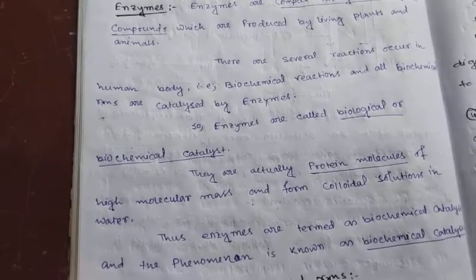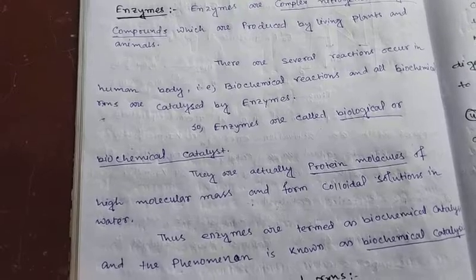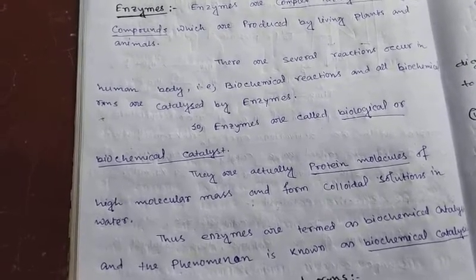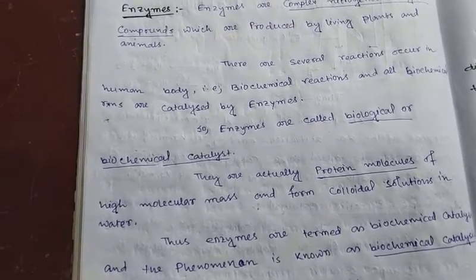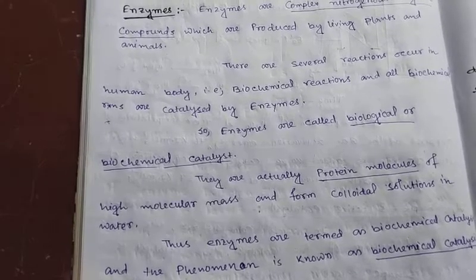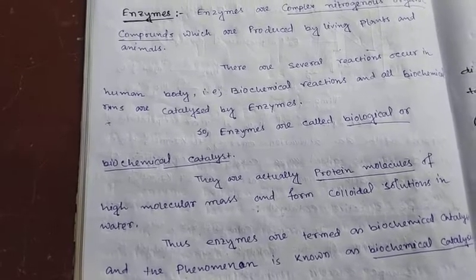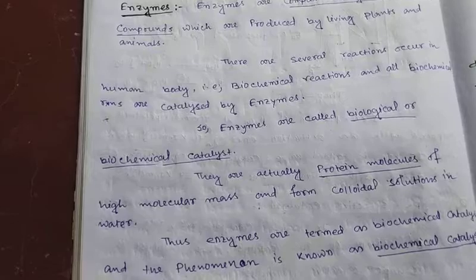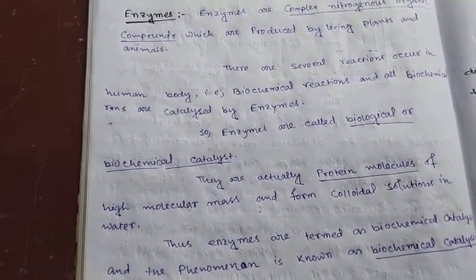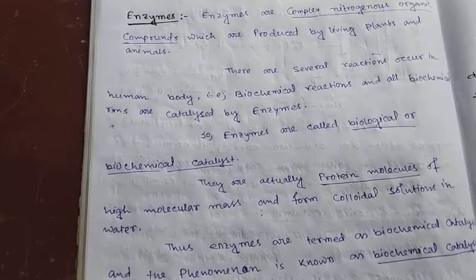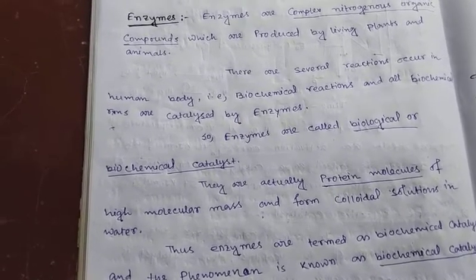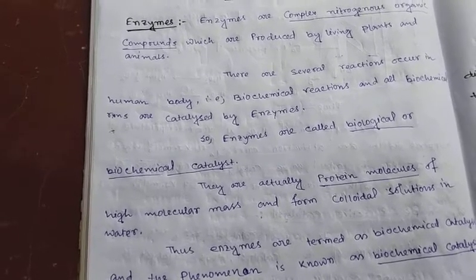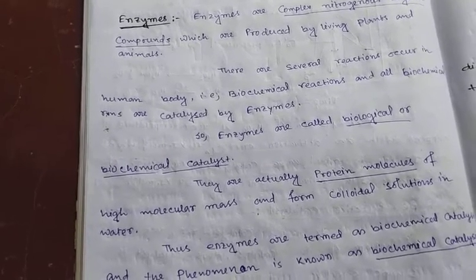There are three types of solutions: a true solution, a suspension, and a colloidal solution. A true solution is a homogeneous mixture — for example, salt in water.